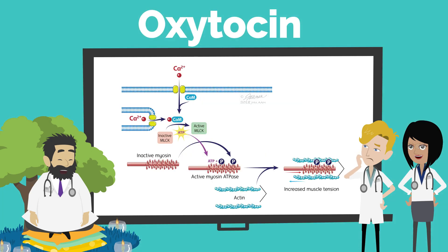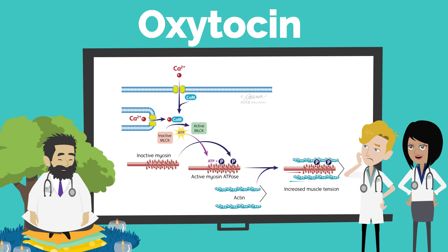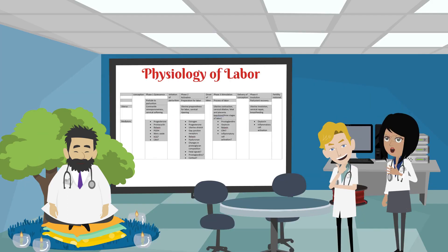Oxytocin stimulates smooth muscle uterine contractions. Receptor expression is increased nearly 200-fold during the second phase of parturition, or the activation phase. More receptors are located in the fundus of the uterus compared to the lower uterine segment. Oxytocin activates phospholipase C, which increases intracellular calcium. These increased calcium levels stimulate the calmodulin-mediated activation of myosin light chain kinase to effect uterine smooth muscle contraction. And remember, medical student Zachary, we can give oxytocin exogenously in labor and postpartum to further stimulate uterine contractions, thus overcoming dysfunctional labor or uterine atony.